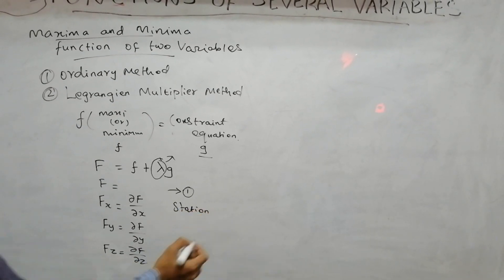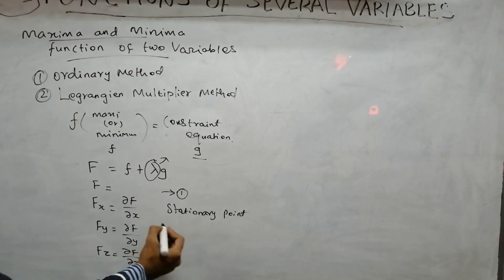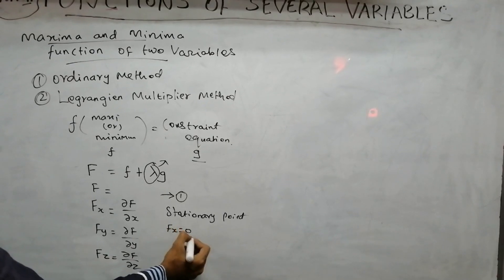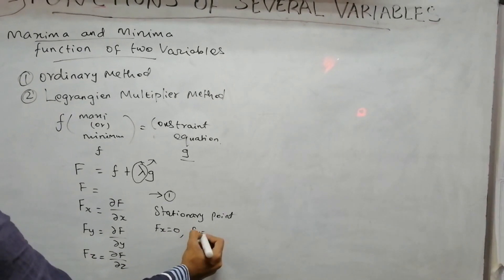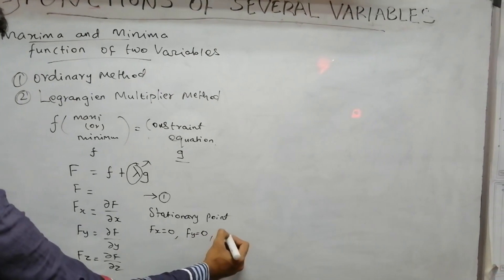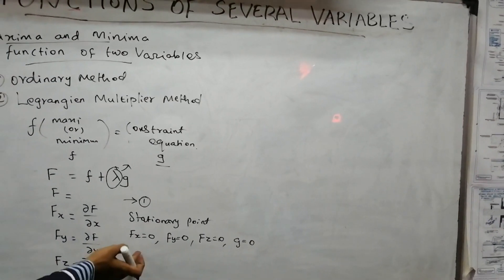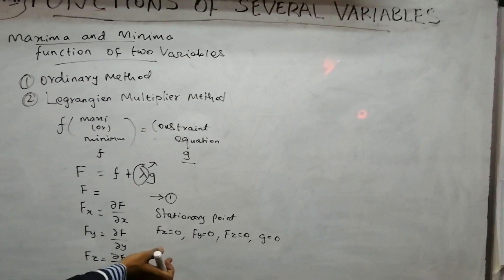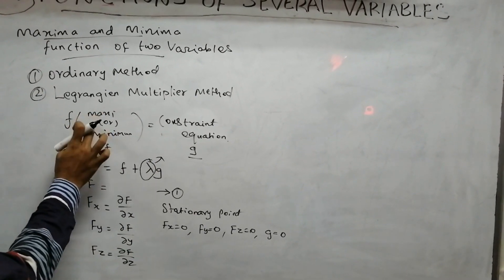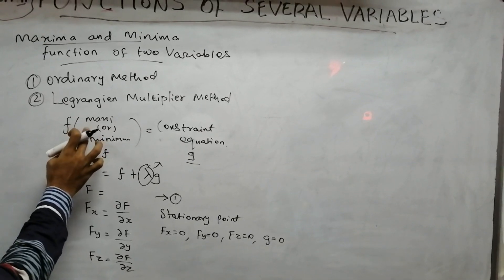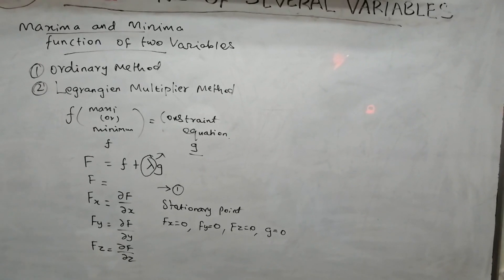The next step is to find the stationary point. At the stationary point, Fx = 0, Fy = 0, Fz = 0, and g = 0, giving us equations in x, y, and z.